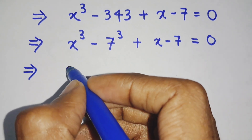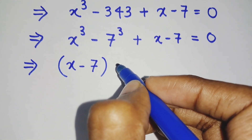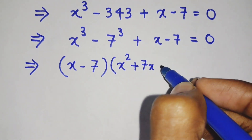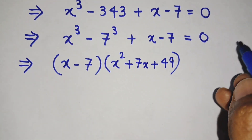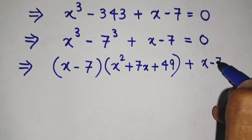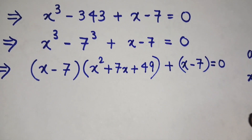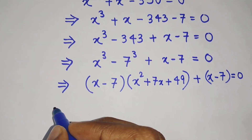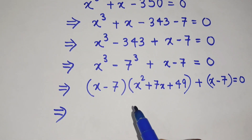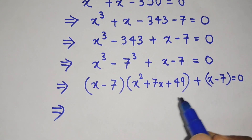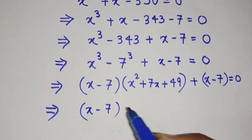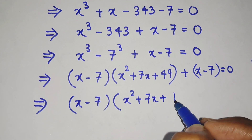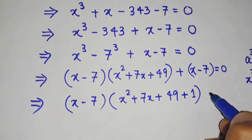Substituting the formula, we get: x minus 7, into x squared plus 7x plus 49, plus x minus 7, equals to 0. The first term is x minus 7 into x squared plus 7x plus 49, and the second term is x minus 7. So we will take x minus 7 common out of both terms. From the first term and second term, x minus 7 is common, and what remains is x squared plus 7x plus 49 from the first term, plus 1 from the second term.